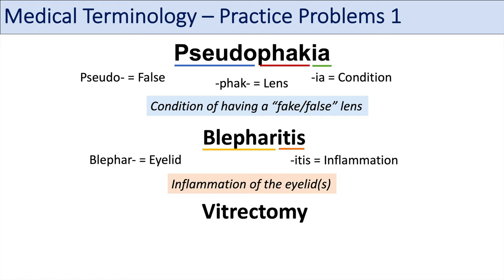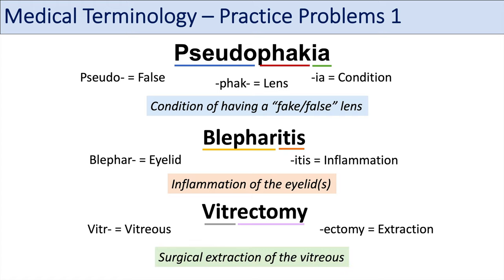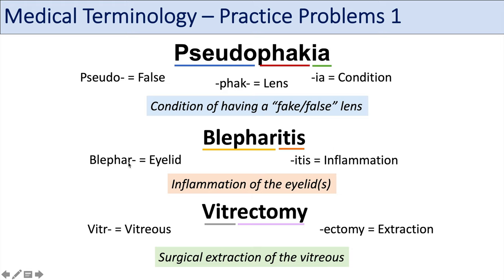The third medical term to break down is vitrectomy. Vitre refers to the vitreous or vitreous humor, and the suffix ectomy refers to surgical removal or extraction. So vitrectomy is the surgical removal of the vitreous humor from the eye. To recap: pseudophakia — pseudo meaning false and phak referring to the lens — describes patients who've had cataract surgery. Blepharitis means inflammation of the eyelids. And vitrectomy means surgical extraction of the vitreous humor.